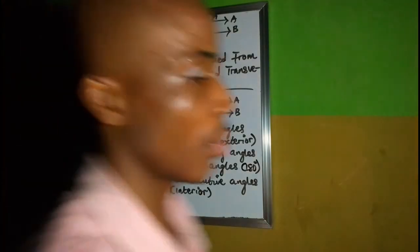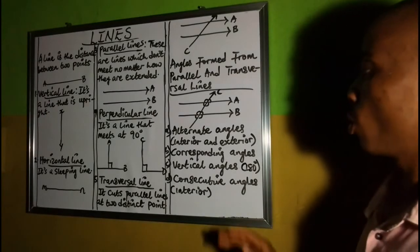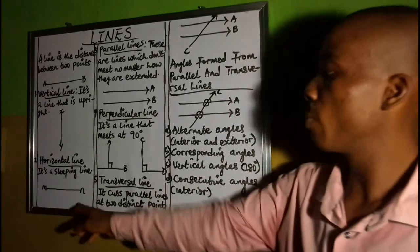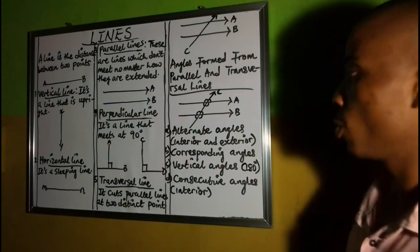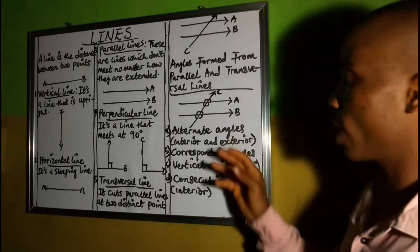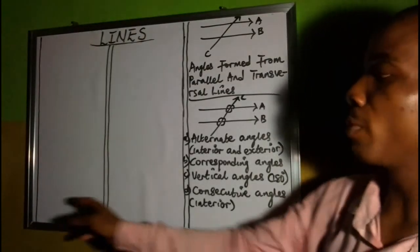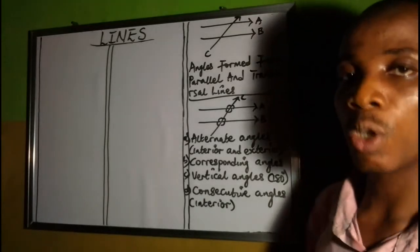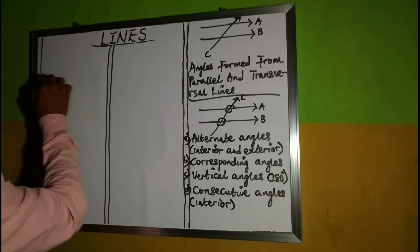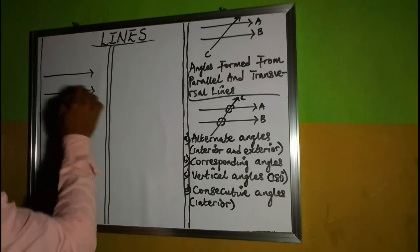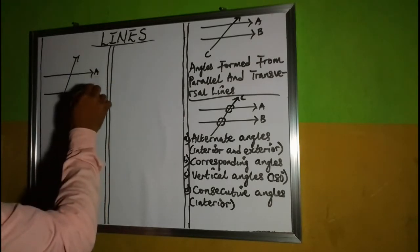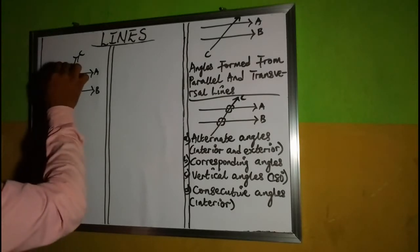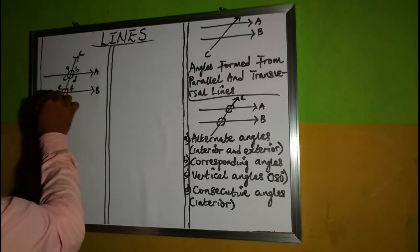Based on illustration, I'm going to illustrate all these angles on the parallel and transversal lines. I'll need to rub off and redraw. So I have my parallel lines and the transversal cutting through them. I will use alphabets to indicate the angles: this is A, B, C, D, E, F, G, and H.